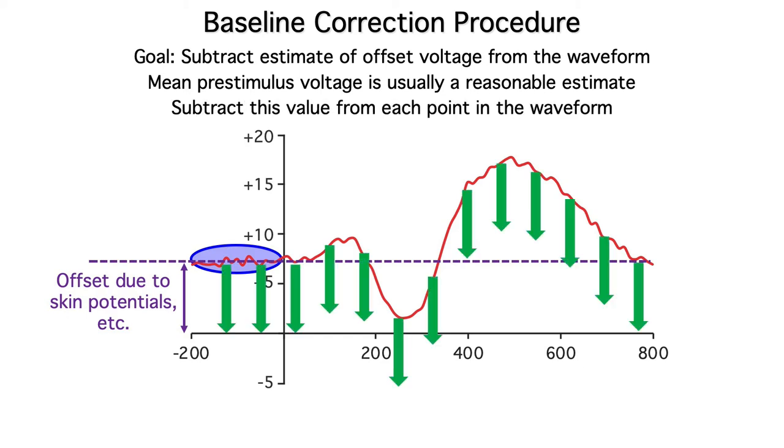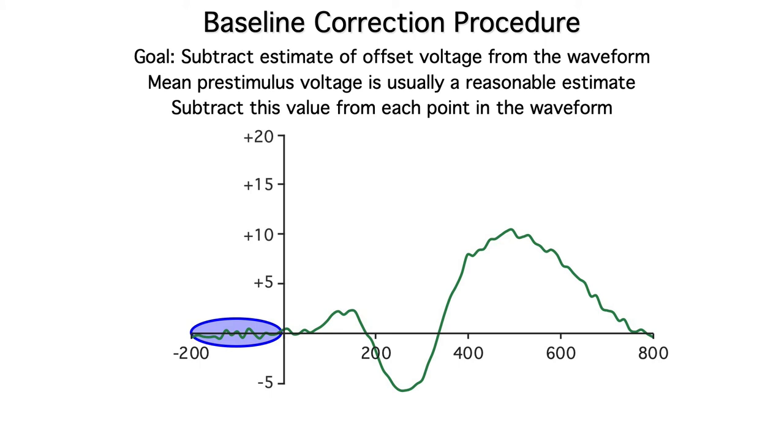We then subtract that mean pre-stimulus voltage from every point in the waveform, causing the whole waveform to shift downward. Now the average pre-stimulus voltage is hovering around zero. This seems pretty straightforward.